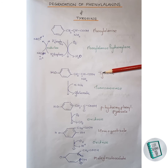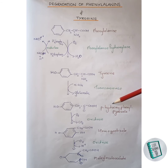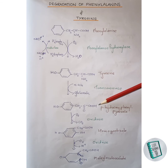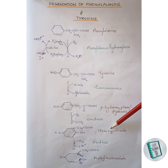This tyrosine thus formed gets transaminated in the presence of transaminase enzyme to form para-hydroxyphenylpyruvate. This compound then, in the presence of oxidase enzyme, forms homogentisate.